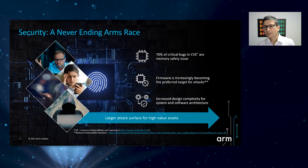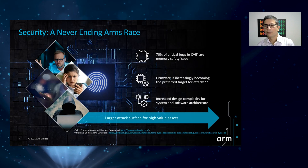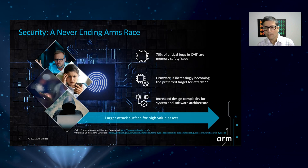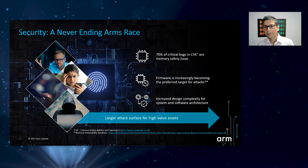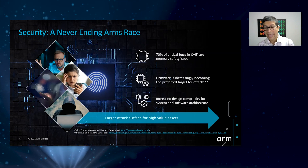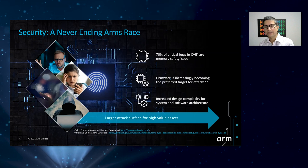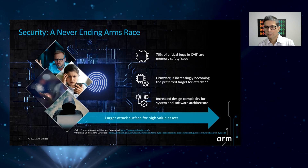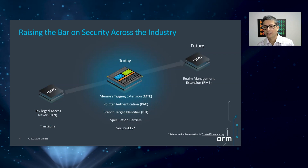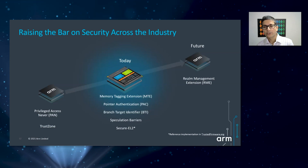Let me now highlight the security foundations for Total Compute Solutions. Security is a never-ending arms race with the hackers. As the value of personal assets on client devices increases, so does the number of threats. Memory safety issues still persist alarmingly across millions of lines of code in applications deployed across billions of client devices. Firmware is increasingly becoming the preferred target for attacks. The first implementation of the ARM v9 architecture supports five new security technologies. Let me focus on the Memory Tagging Extension, or MTE, as an example of ARM's Total Compute strategy in action.